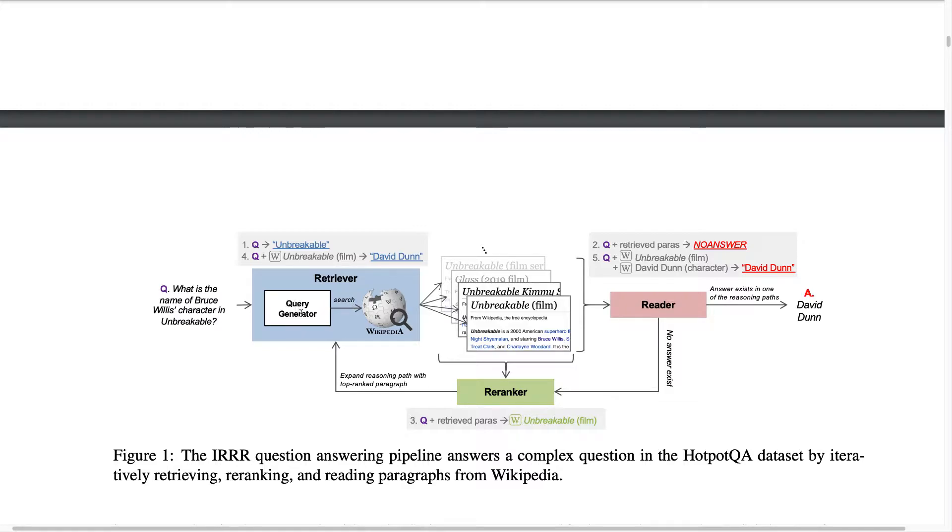So once you have generated a suitable query with this retriever you get let's say four paragraphs which then you have to input to a reader component which is capable of finding an answer span which contains the answer that you're looking for, for example David Dunn which is the correct answer here.